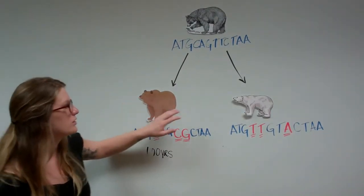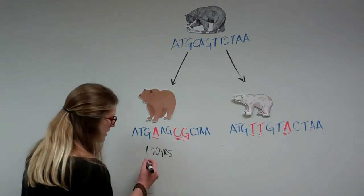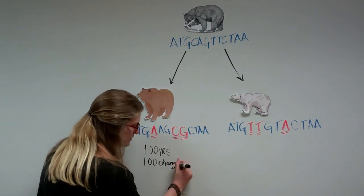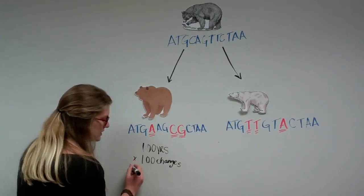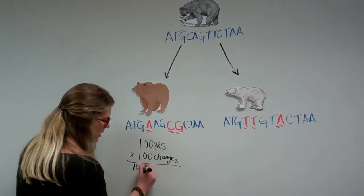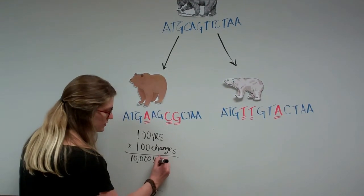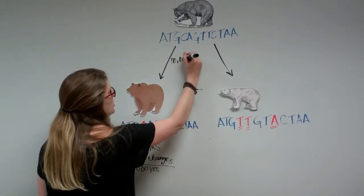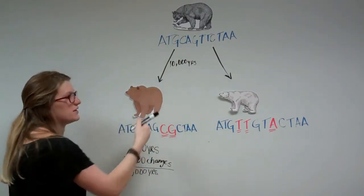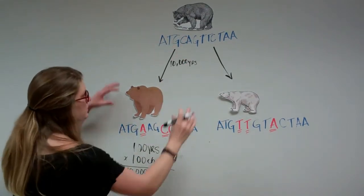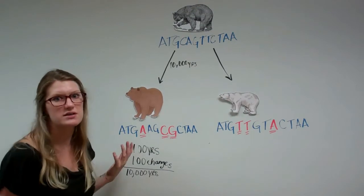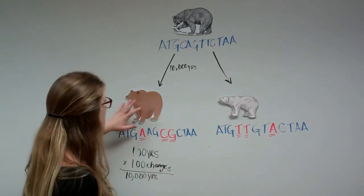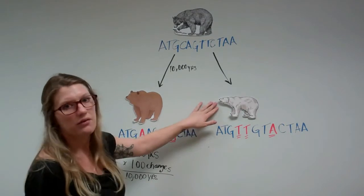And if we compare the brown bears and the polar bears, we can see that over time they have had one hundred changes happen in their genome compared to their ancestor bear. And so if we multiply that together, that will tell us that these bears split off from each other ten thousand years ago. So ten thousand years ago, this ancestor bear population experienced speciation. It was split up into two groups. These groups experienced differences in their environments, which caused them to acquire different traits, changes in their genome code. And now, today, we have two different species, the brown bear and the polar bear.